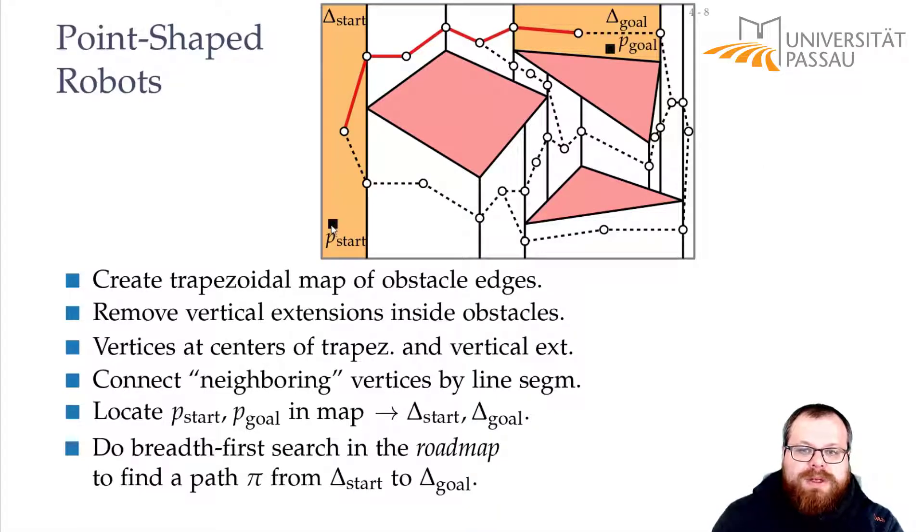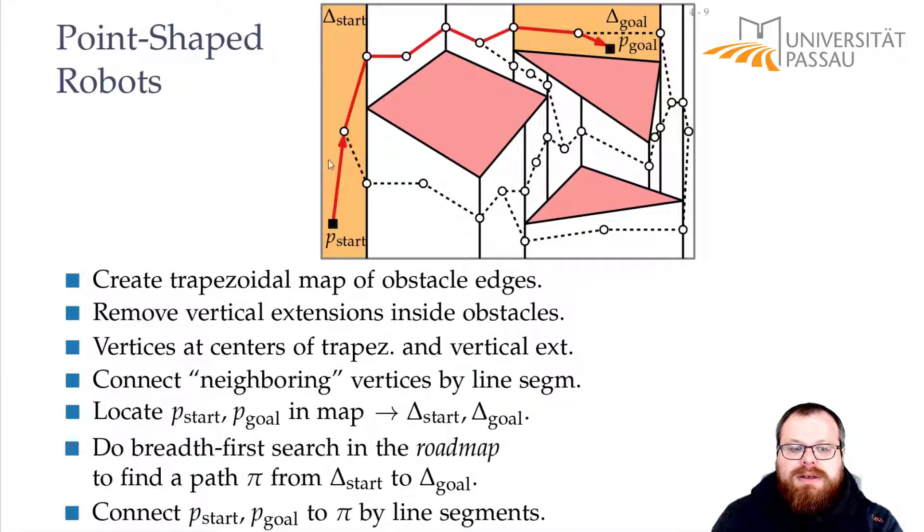And to find a path from the start point to the goal point, we just have to connect it to the vertex that represents its trapezoid. And we know that we can do this because all these trapezoids here are convex points. That means that every point sees every other. So our goal point and our start point definitely see the vertex that we placed inside the trapezoid.